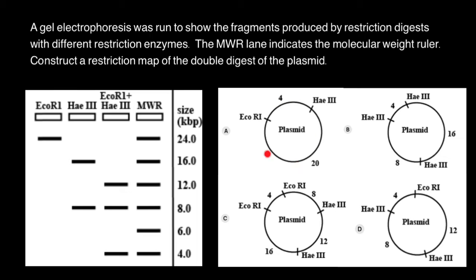Plasmid represents circular double-stranded DNA, and if we cut it in a single place, we are going to get one band.